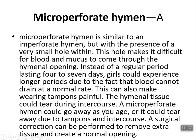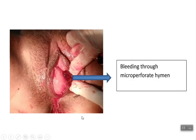Wearing tampons can be painful with a micro perforate hymen, and hymenal tissue could tear during intercourse. A micro perforate hymen could resolve as age increases or could tear due to tampon use or intercourse. Surgical correction can be performed to remove the extra tissue and create a normal opening. As seen in the diagram, there is only a very small hole, so only a small amount of bleeding can come through, resulting in longer menstrual periods.